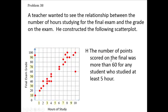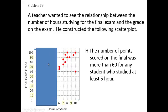The number of points scored on the final was more than 60 for any student who studied at least five hours. Cross off that left side. Did everybody score more than 60? No — this student studied 10 hours and he didn't score more than 60. He scored exactly a 60.